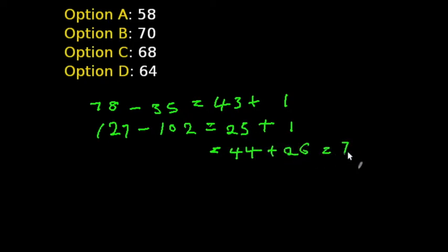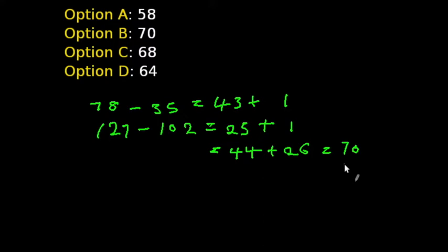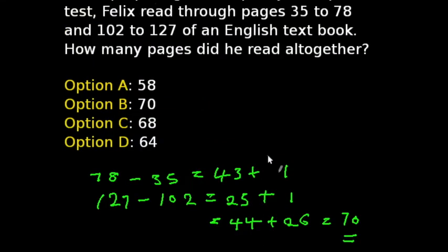44 plus 26 gives us 70, which is the total number of pages Felix read in his English textbook. Our answer is option B, which is 70.